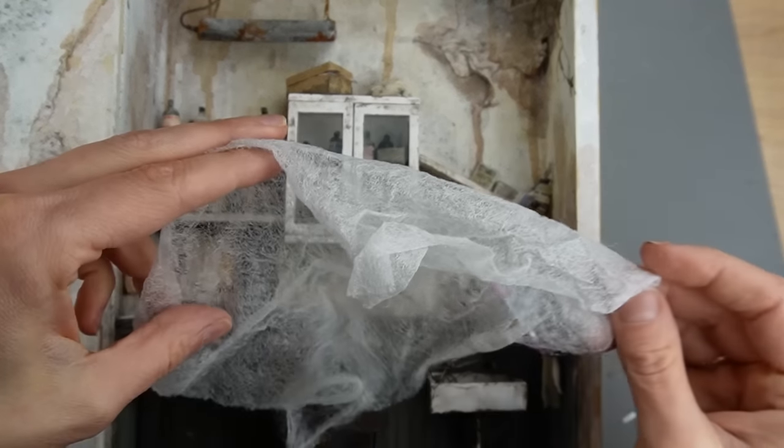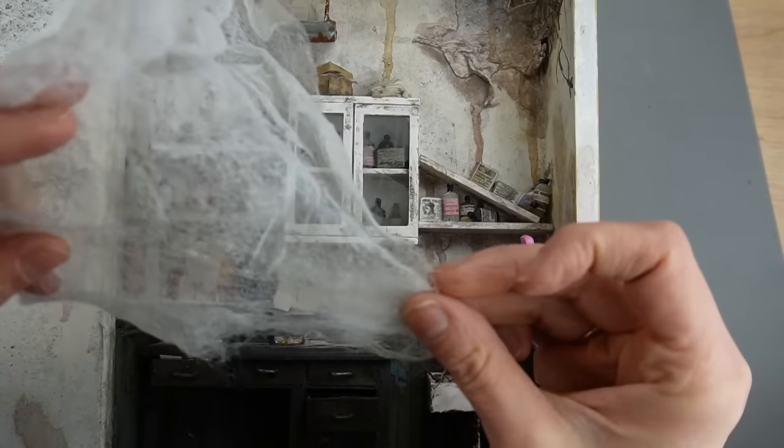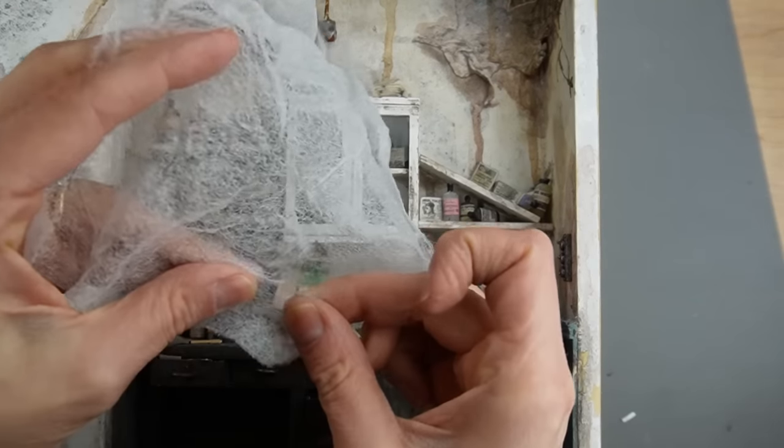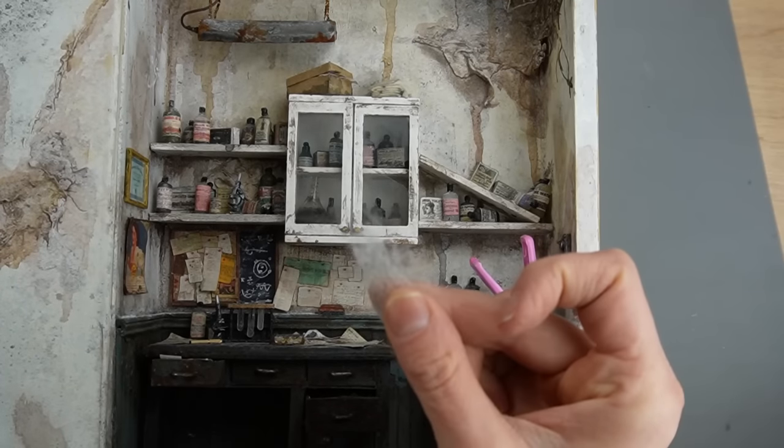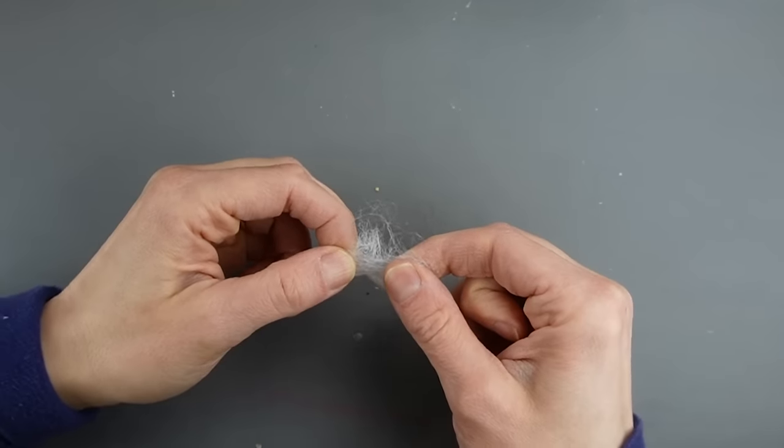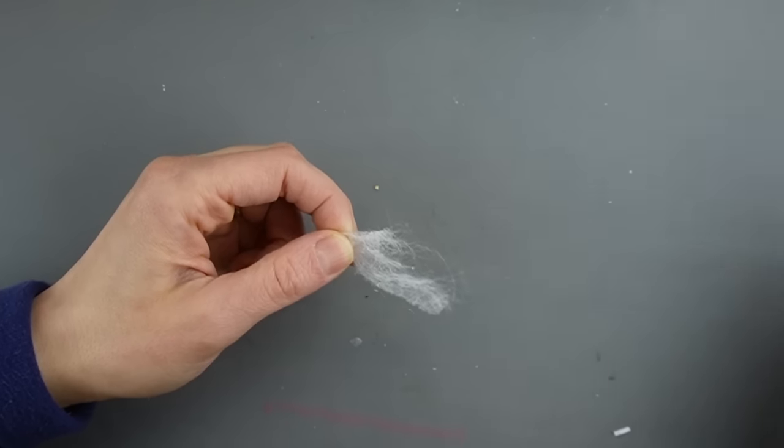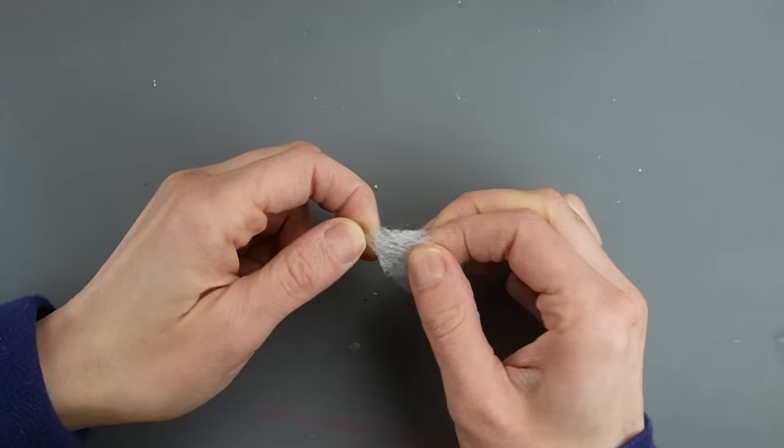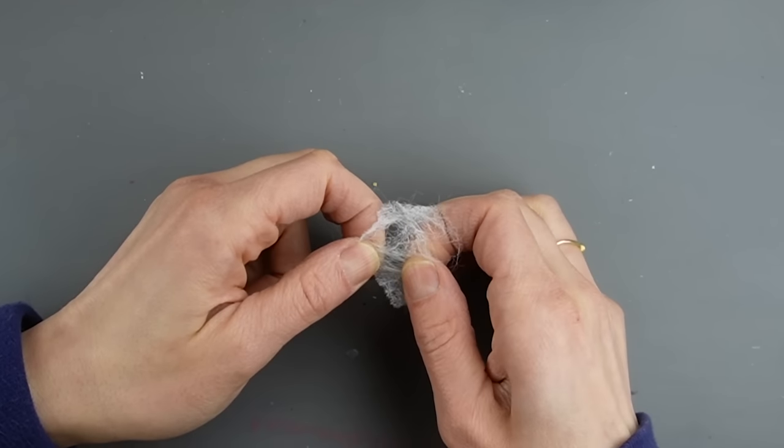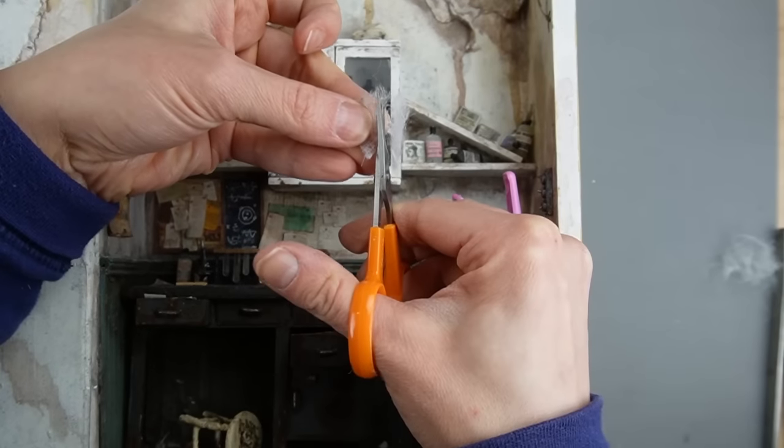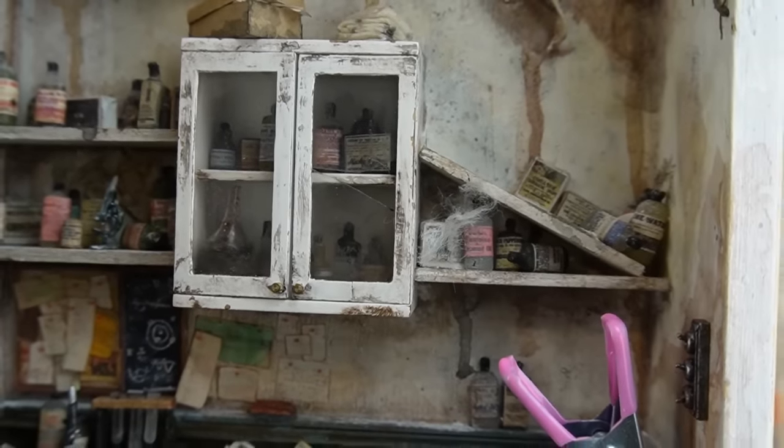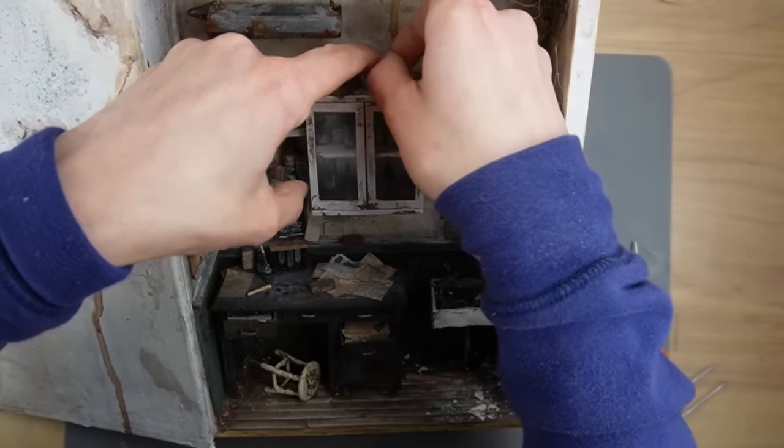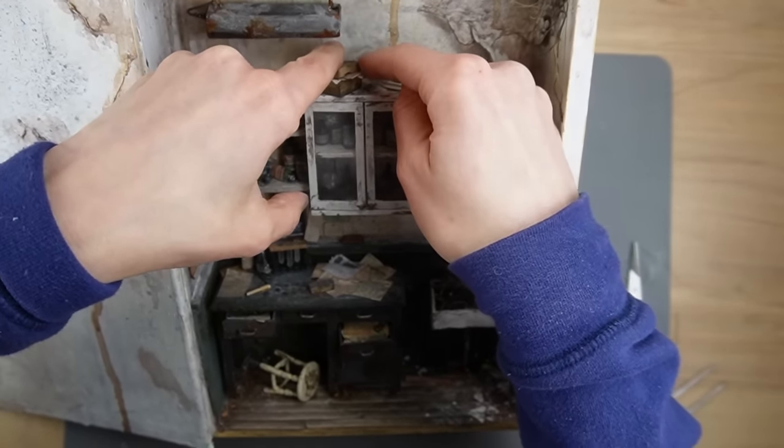To make the space look more abandoned I'm using this used dryer sheet to make cobwebs. I can't remember where I learned this trick but it's important to use a used dryer sheet because a clean one won't pull apart as well. I'm gently tugging at the dryer sheet so it looks less uniform and giving it a trim and gluing it in a couple spots. I'm attaching it with a fabric tack and it's really important to let the glue dry before you start stretching and manipulating it.